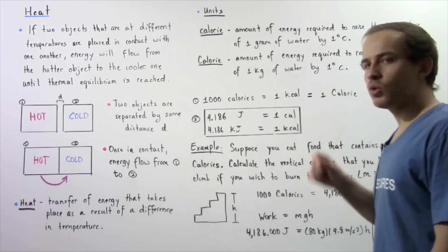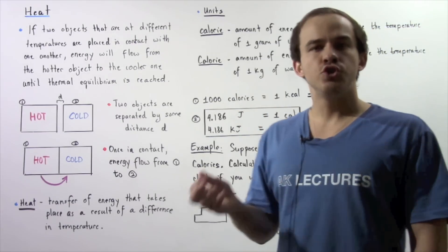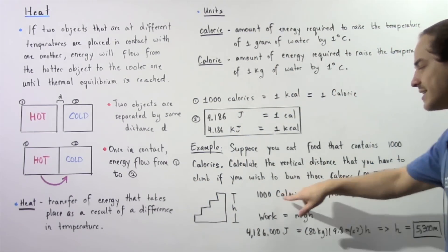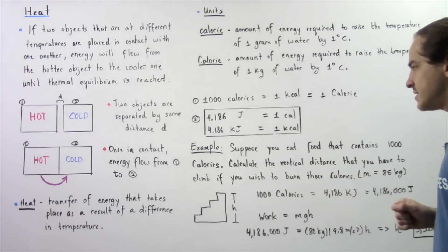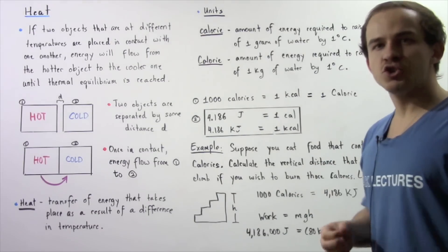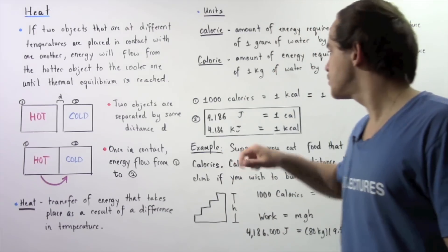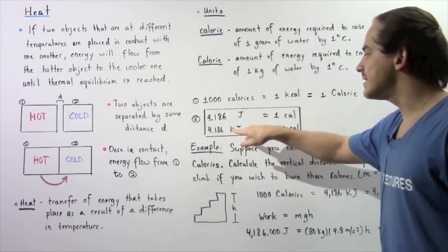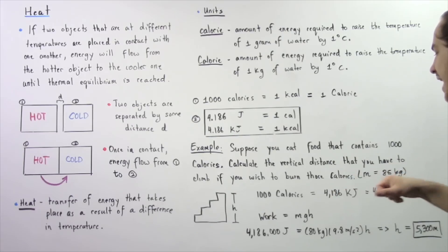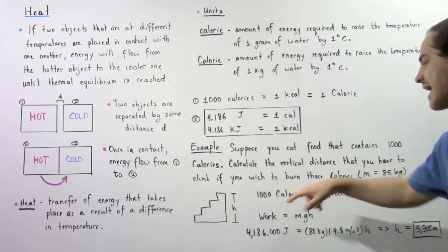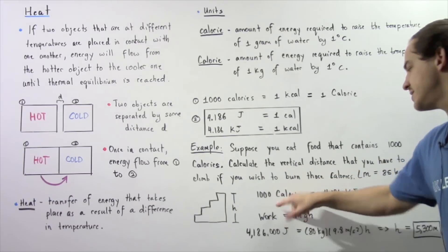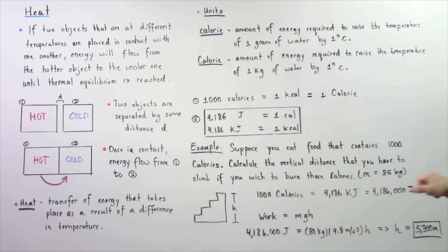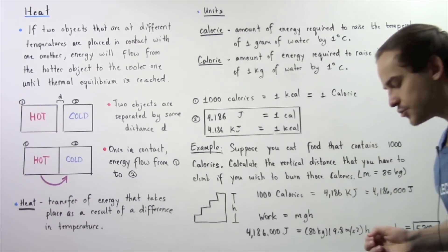First, we have to convert Calories to joules of energy. So 1000 Calories with a capital C is equivalent to 1000 times 4.186 kilojoules. That equals 4186 kilojoules of energy, which is also equivalent to 4,186,000 joules of energy.